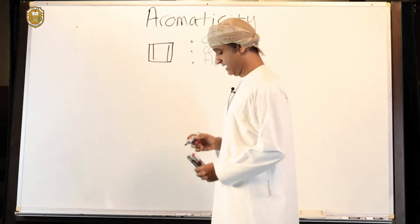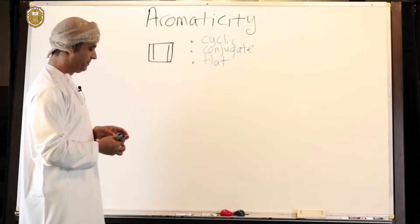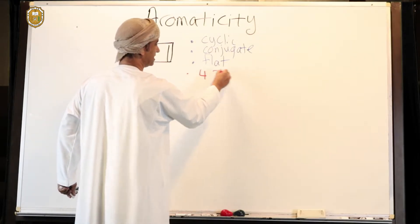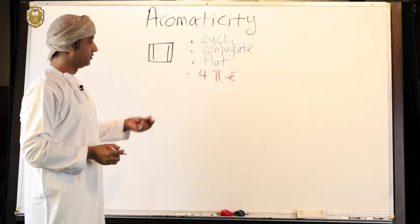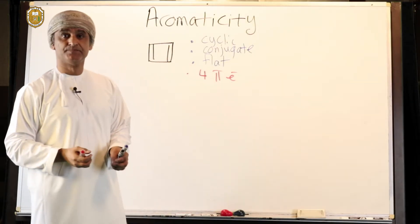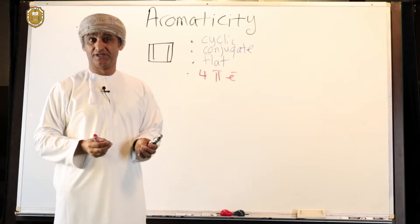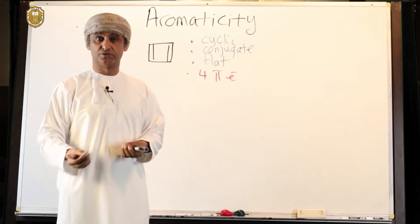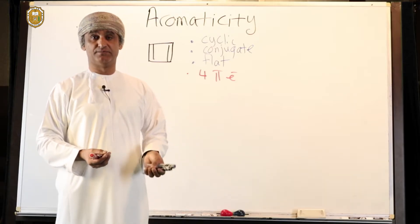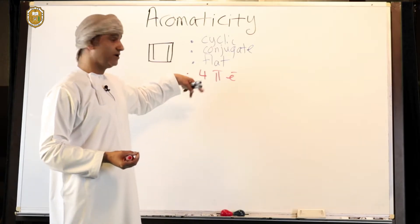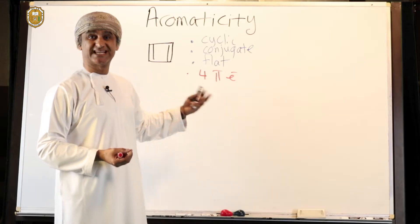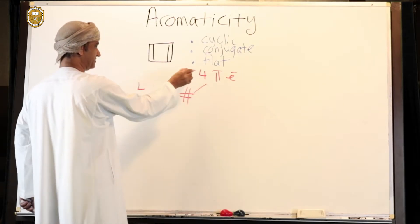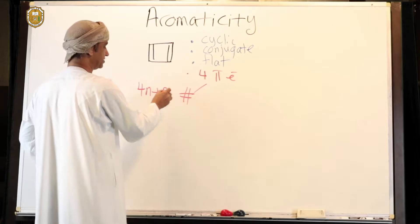It is flat and planar. Is it 4n+2? The number of pi electrons here is actually 4 — 2 here and 2 here. We need to check that this is in accordance with the Huckel rule. If n=0, 4n+2 is 2; if n=1, 4n+2 is 6. So 4 falls in between and cannot satisfy the rule — 4 pi electrons is not 4n+2.